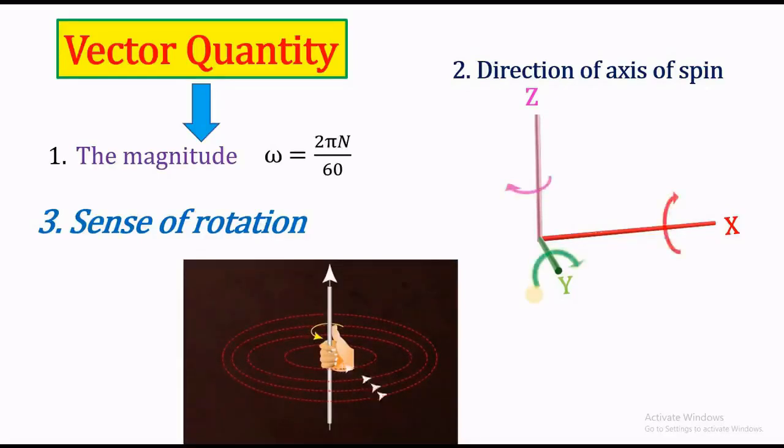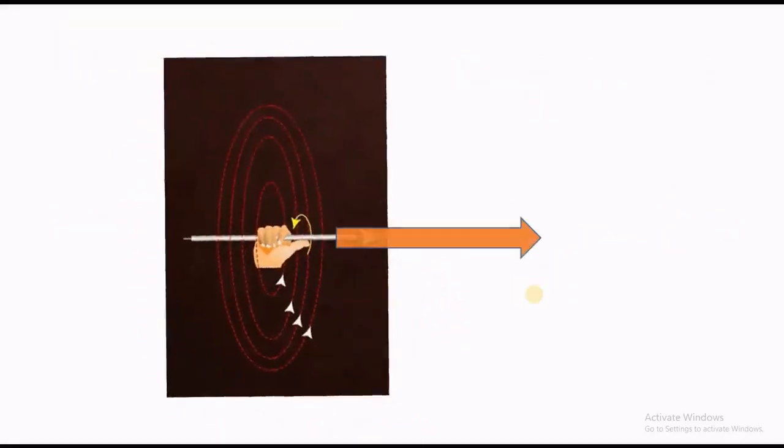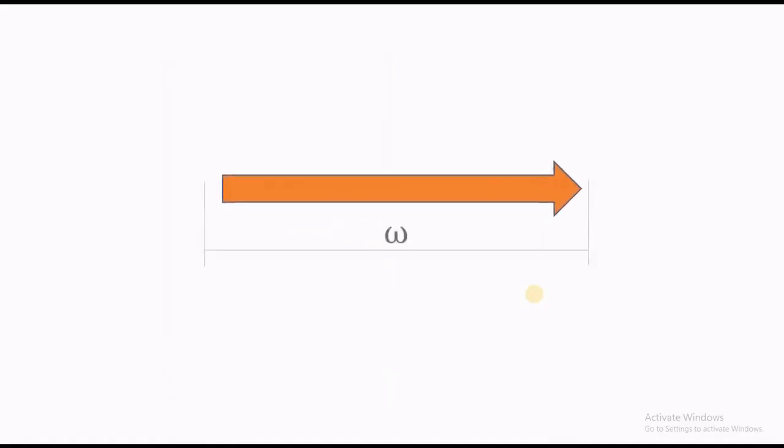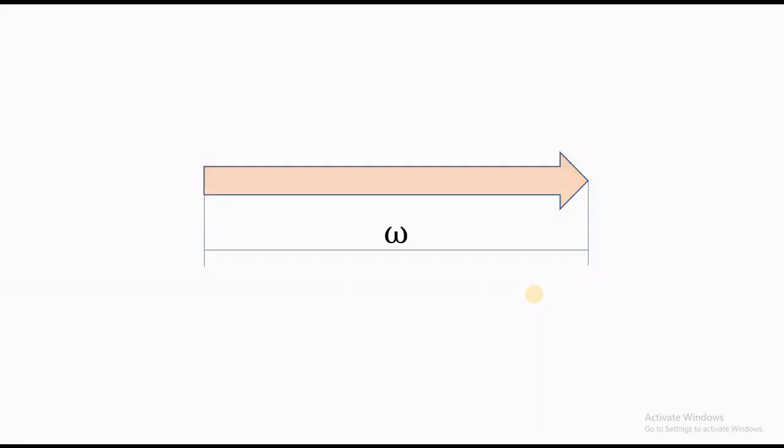We will use the right hand thumb rule shown in the screen. The rule says that keeping the fingers curving on the inside pointing towards the sense of rotation, stretching out the right hand thumb outwards perpendicular to fingers, the thumb indicates the direction of spin. The vector quantity can be represented as a single vector, the length of which gives the magnitude, the direction gives the sense and the axis about which the rotation is taking place.